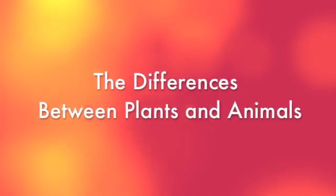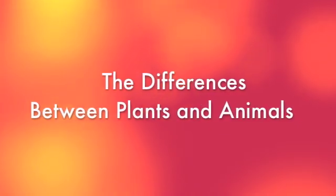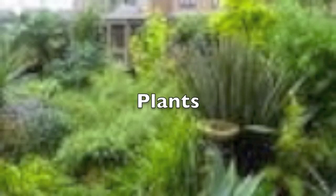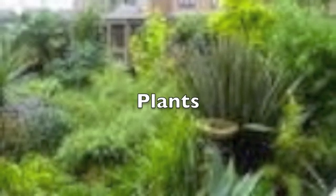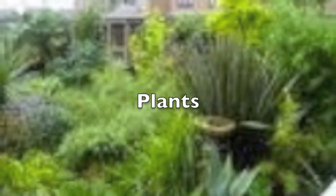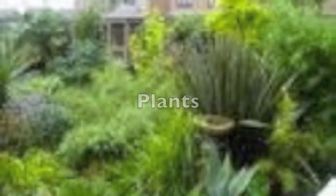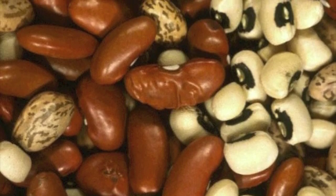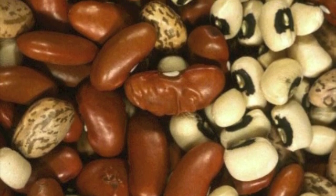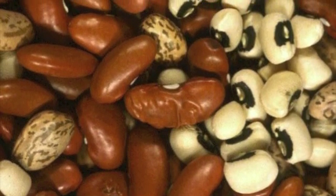The differences between plants and animals. Plants: in order for plants to grow, they come from seeds. Once the seed develops, they turn into plants.